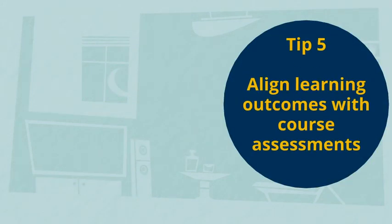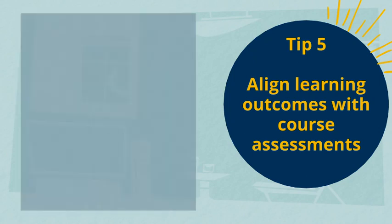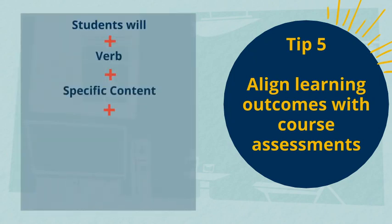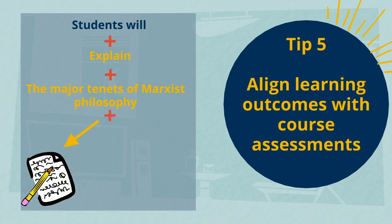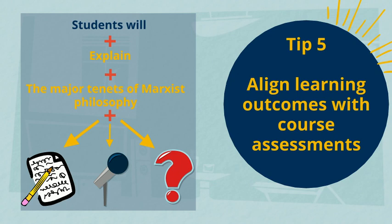Tip number five: align your learning outcomes with course assessments. Determine the ways that students can demonstrate their thinking on an assignment. For example, will your students explain the major tenets of Marxist philosophy in a paper, a presentation, or in an exam question? All three will work if you want students to explain something — you just have to decide which works best for your course and your grading sanity.